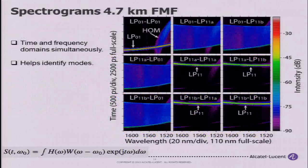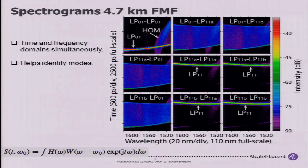Another way to look at the transfer matrix is the spectrogram, computed by spectrally dissolving each temporal component of the transfer function. This helps identify modes — for instance, in the top left cell for the LP01 mode, you can see a clear streak for the 01 mode, but also something at lower wavelengths where higher order modes start becoming guided. In the crosstalk cells you can see the crosstalk plateau.